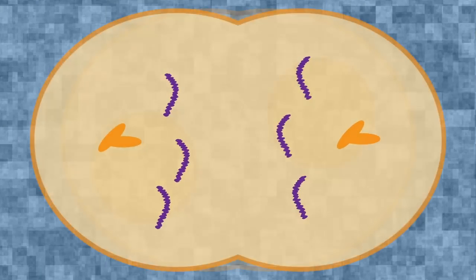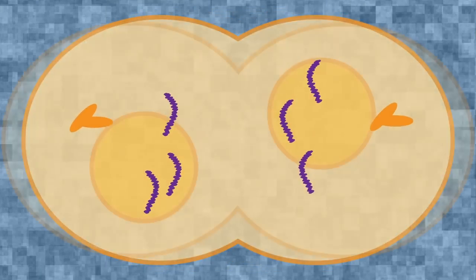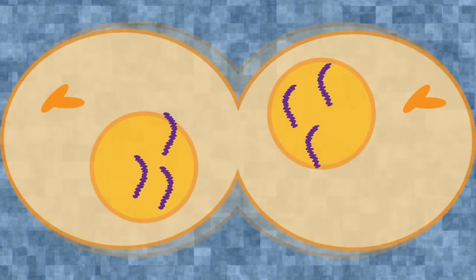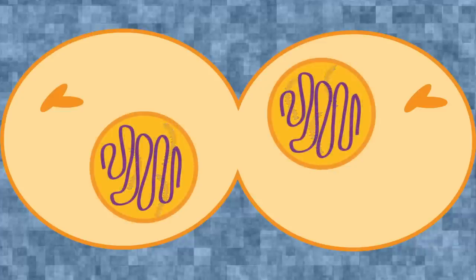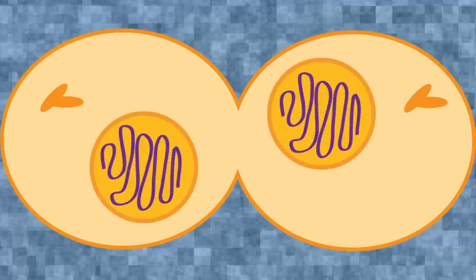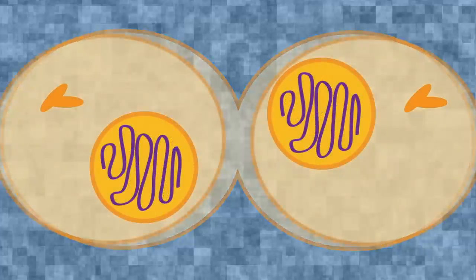Now, finally, we have hit telophase and cytokinesis. The cell starts to pinch together in the middle, the nuclei begin to reform, and the chromosomes begin to unwind. After that, the two new daughter cells will completely break apart.